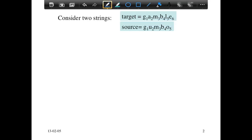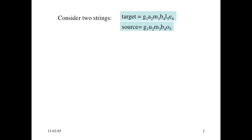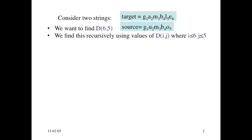Our goal in this example is to find the value of the minimum edit distance — we represent that as D(6,5). Six because the target has six characters, five because the source has five characters. We want to find D(6,5) recursively using values of D(i,j) for smaller values of i and j, where i ≤ 6 and j ≤ 5. Let's look at D(4,3) as a concrete example of how we can build the minimum edit distance.